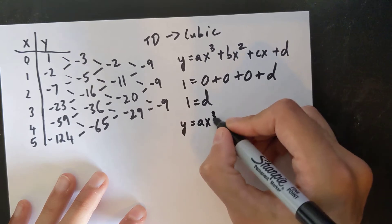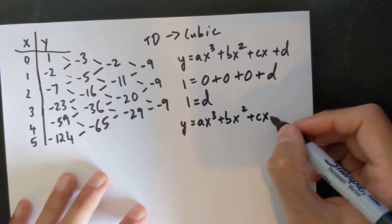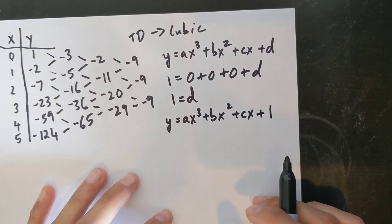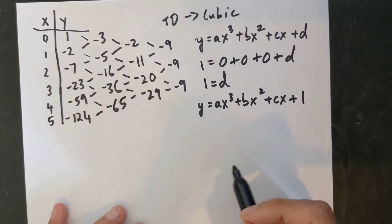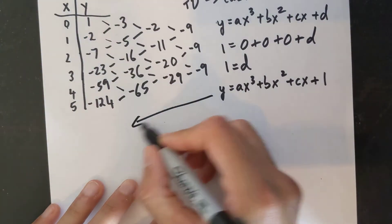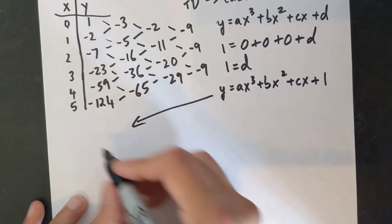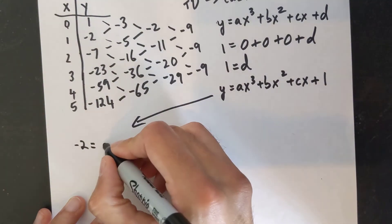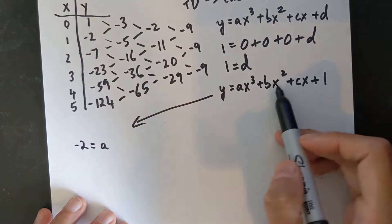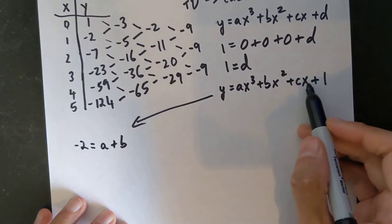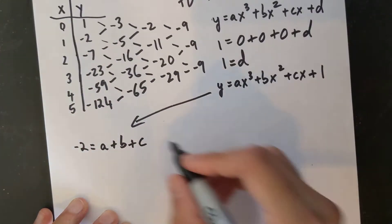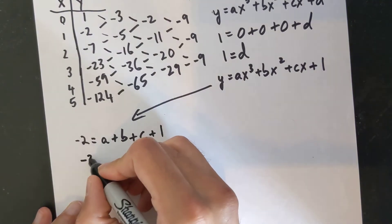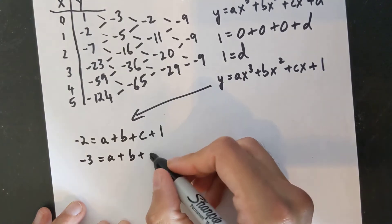So now y = ax³ + bx² + cx + 1. My next goal is to find a, b, or c. I'll sub in the next point: x = 1 and y = −2. So −2 = a(1)³ + b(1)² + c(1) + 1, which gives −2 = a + b + c + 1. Moving the 1 to the other side: negative 3 equals a plus b plus c. That's my first equation.